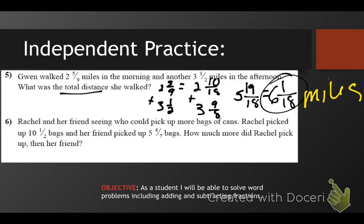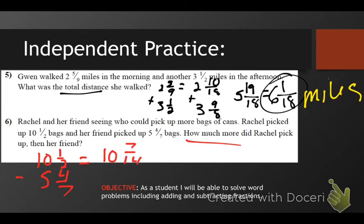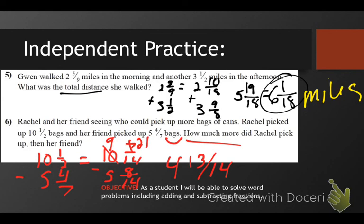Rachel and her friend were seeing who could pick up more bags of cans. Rachel picked up ten and a half bags and her friend picked up five and four-sevenths bags. How much more did Rachel pick up than her friend? 'How much more' means subtraction. She picked up ten and one-half, subtract five and four-sevenths. That's going to be fourteen as a common denominator. How does two become fourteen? Multiply by seven — one times seven is seven. And this one would be eight fourteenths. Seven minus eight — you can't do that, so you should have borrowed from the ten, which becomes a nine. Fourteen plus seven is twenty-one. Twenty-one minus eight is thirteen over fourteen, and nine minus five is four. We need a label — it says how much more did Rachel pick up than her friend — the label is bags: four and thirteen fourteenths bags more than her friend.